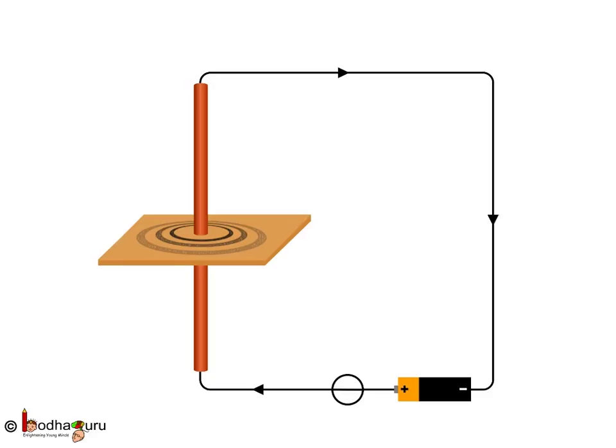Then we will see a pattern of iron filings is formed. And what is this pattern? This pattern is of concentric circles around the copper wire.